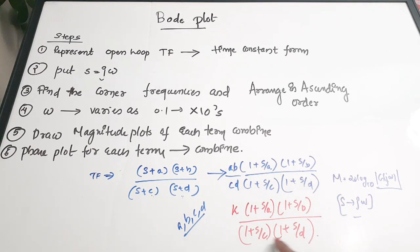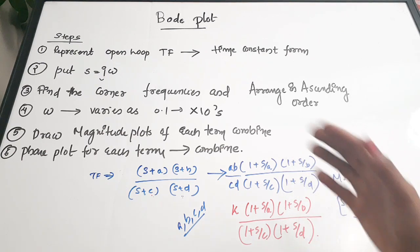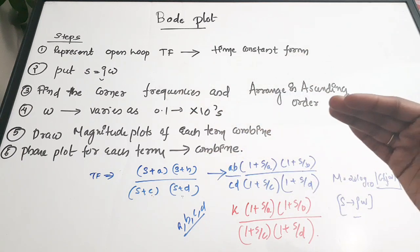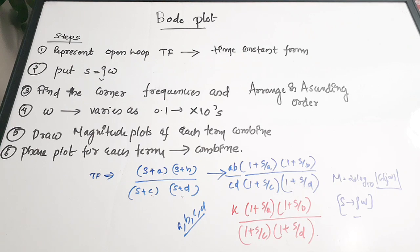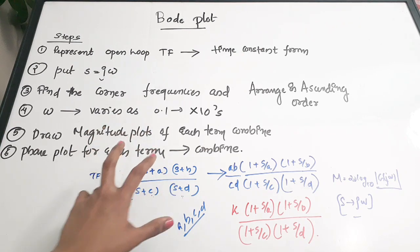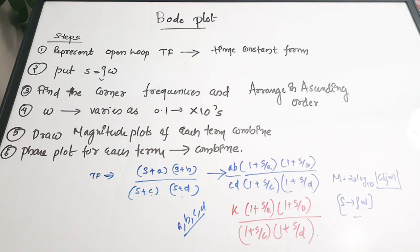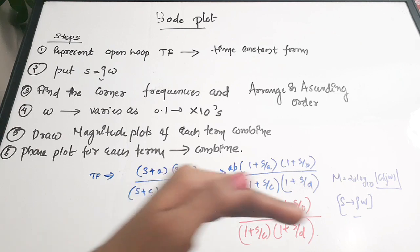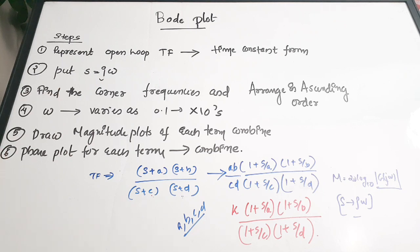The fifth step is to plot the magnitude plots for each individual term in the transfer function and then combine them. You draw a starting line and then extend the slope accordingly. You draw the magnitude plots for all the terms in the transfer function and combine them to get the total magnitude plot. Similarly you form the phase plot, both plotted against omega on the x-axis.